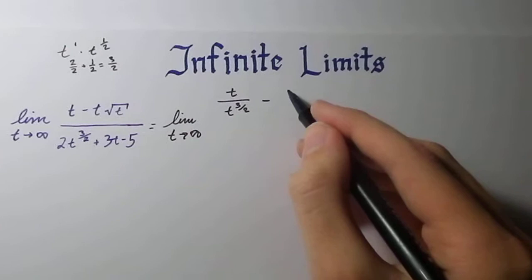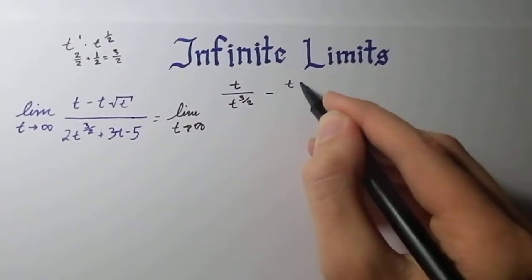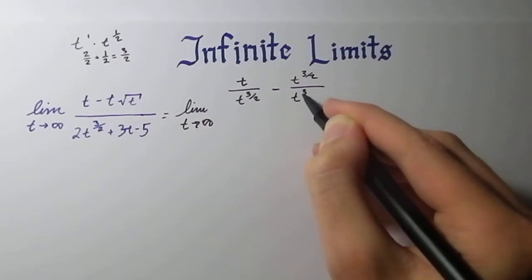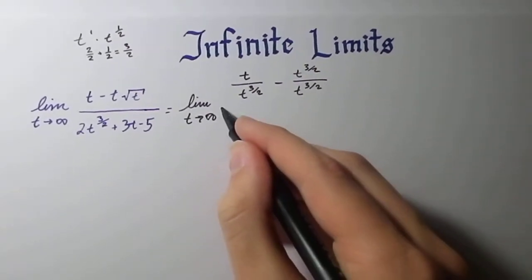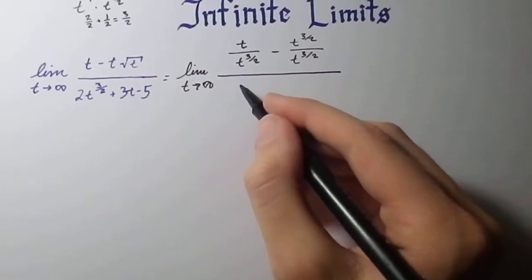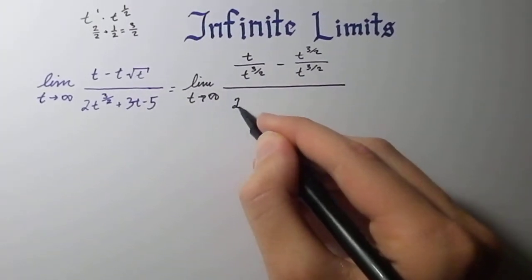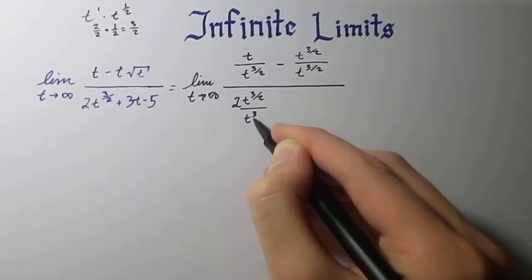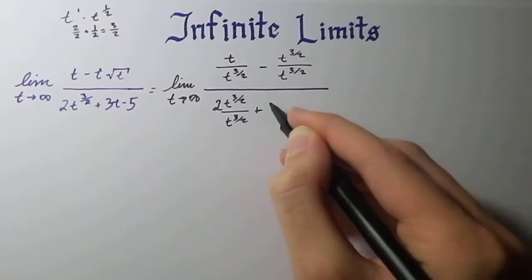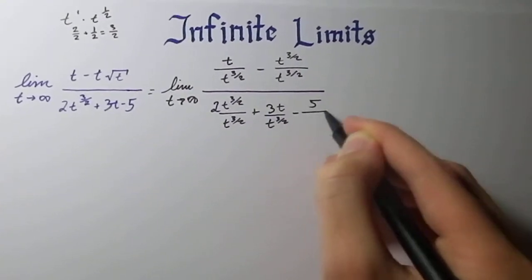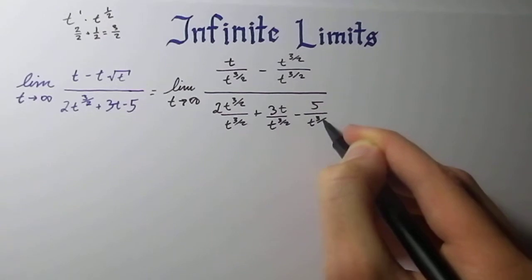So now we're left with the numerator as t over 3 halves divided by t over 3 halves. And then we divide the numerator and do the same thing with the denominator. So you have 2t to the 3 halves over t to the 3 halves plus 3t over t to the 3 halves minus 5 over t to the 3 halves.